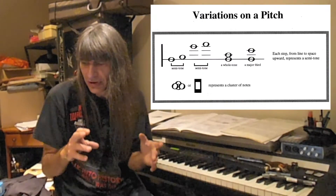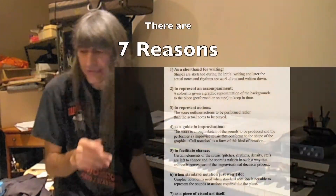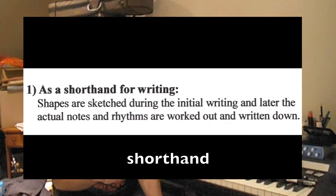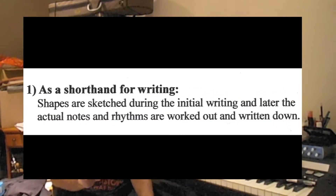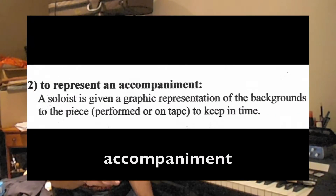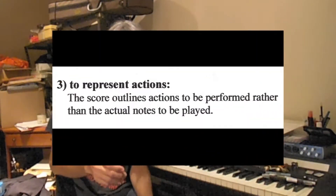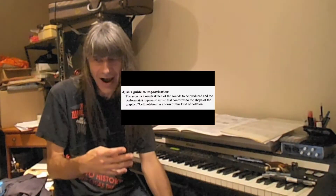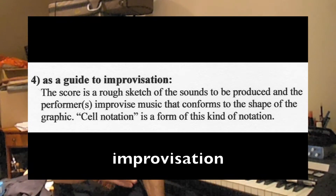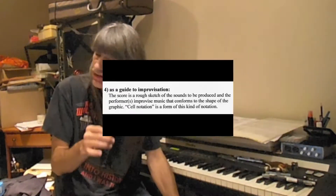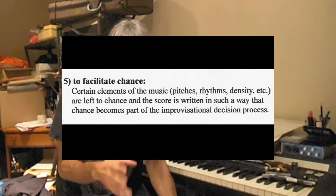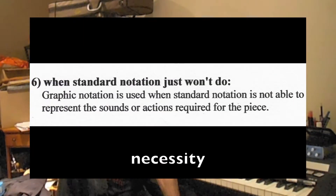The main functional reasons for using graphic notation are: one, as a shorthand to quickly jot something down; two, to represent an accompanying part, like a part on tape; three, to represent actions that have been performed; four, as a guide to improvisation; five, to facilitate chance; and six, when standard notation just won't do and you have to make something up.